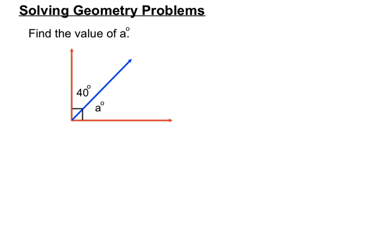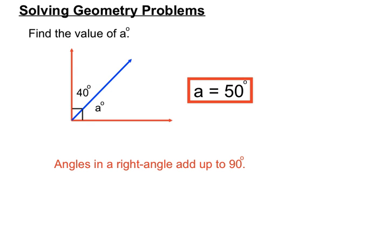Find the value of A degrees here. We've got 40 degrees and A degrees making up a right angle. You can see the right angle symbol in the bottom left-hand corner of the angle. The rule we use is that angles in a right angle add up to 90 degrees, so A and 40 will add up to 90 degrees. A will equal 50 degrees — we can check on our calculator by doing 90 minus 40.